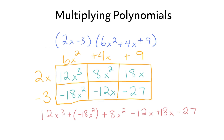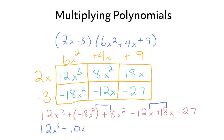Finally we combine our like terms. We keep 12x cubed the same. Negative 18x squared plus 8x squared is negative 10x squared. Negative 12x plus 18x is positive 6x, and then minus 27. So there is our answer.